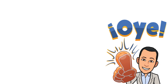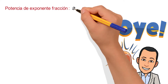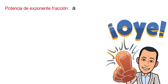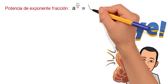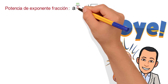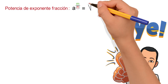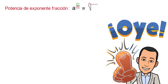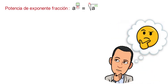To start with the video, we will introduce the property of the potency — the power of a fraction exponent — which is defined as A raised to the fraction M over N, and this is going to be equal to the radical where the denominator N becomes the index of the radical and the numerator M becomes the exponent. Let's see some examples.